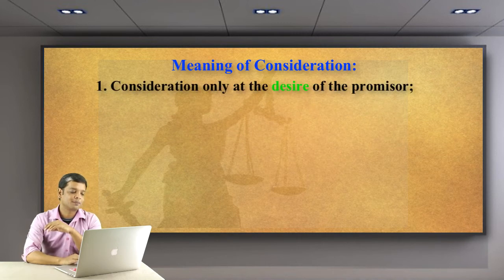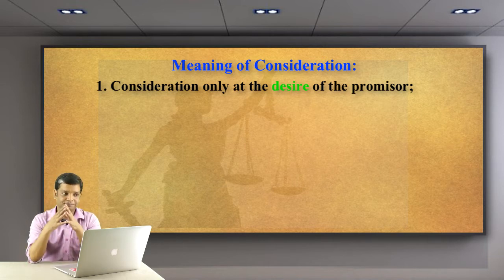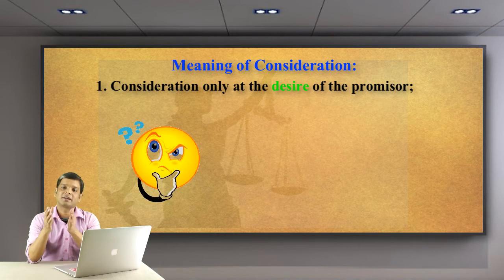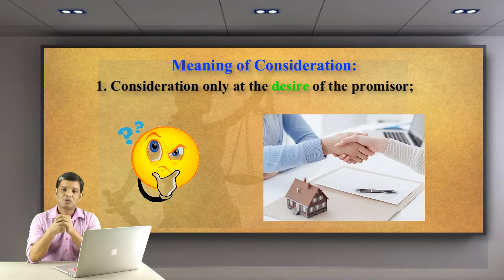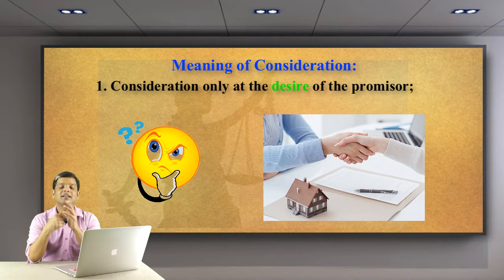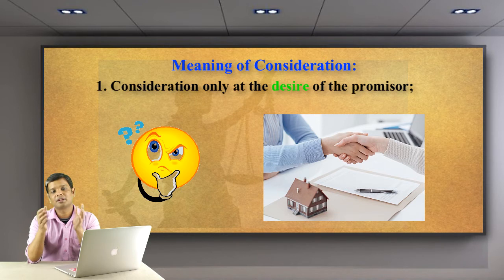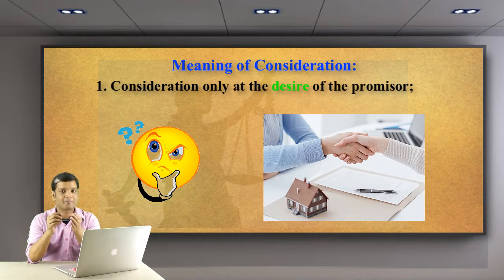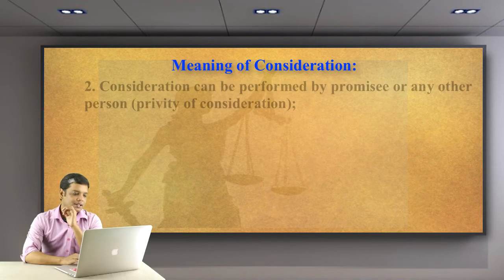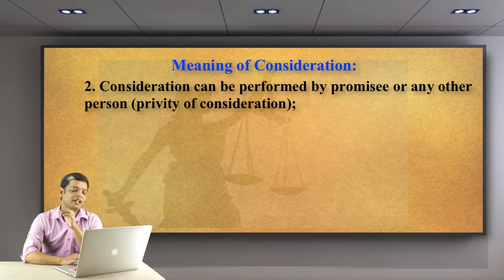Now let's look at the definition in more detail. First clause: consideration only at the desire of the promisor. This means in order to buy the property, you must pay the amount fixed by the seller. If you pay less than that amount, it is invalid or void. Next point: consideration can be performed by the promisee or any other person — that is the principle of privity of consideration.